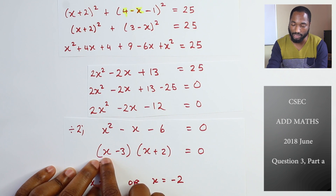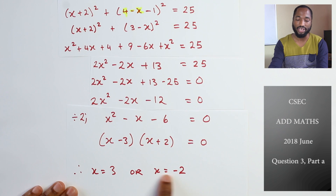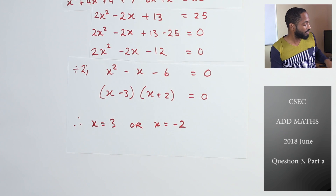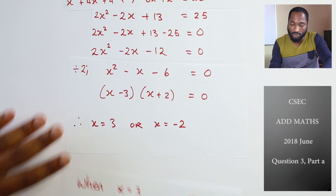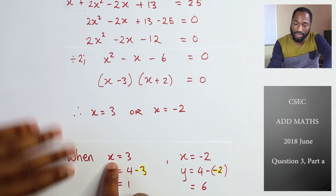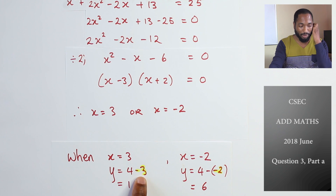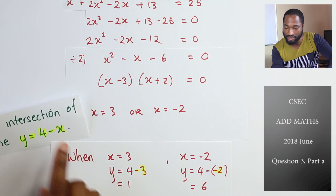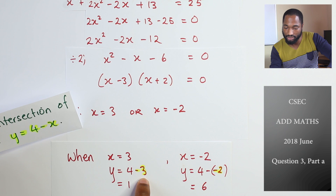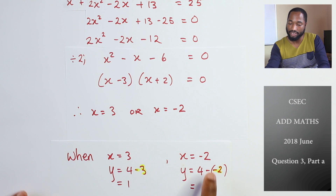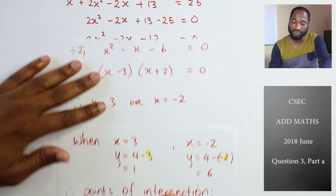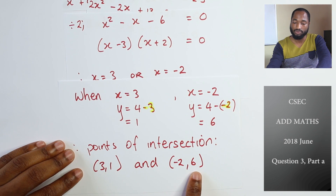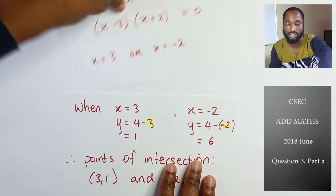Factorize the quadratic: x minus 3 times x plus 2 equals zero. So x equals 3 or x equals negative 2. Now substitute back into the line equation y equals 4 minus x to find the y coordinates. When x equals 3, y equals 4 minus 3 equals 1. When x equals negative 2, y equals 6. So the two points of intersection are 3, 1 and negative 2, 6.